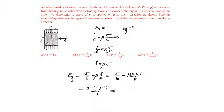From which sigma will be equal to strain into Young's modulus by 1 minus mu square, option D.